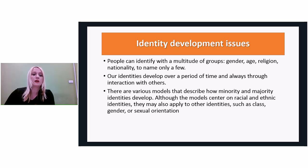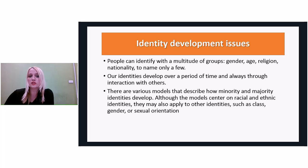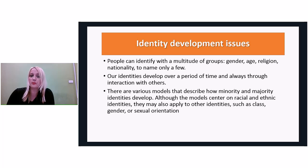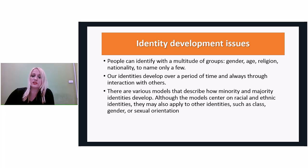Stage four is integration. The ideal outcome of the identity development process is the final stage — the achieved identity. Individuals who have reached this stage have a strong sense of their own group identity and an appreciation of other cultural groups. At this stage they come to realize that racism and other forms of oppression occur, but they try to redirect any anger from the previous stage in a more positive way. The end result is individuals with a confident and secure identity, characterized by the desire to eliminate all forms of injustice.